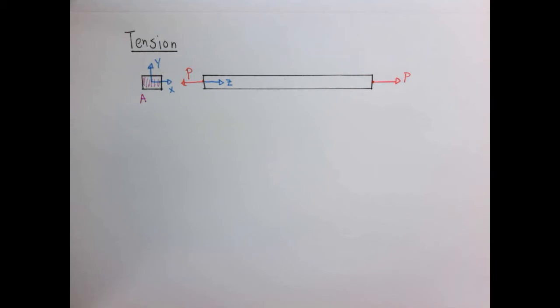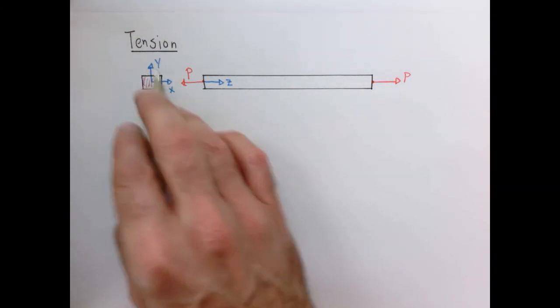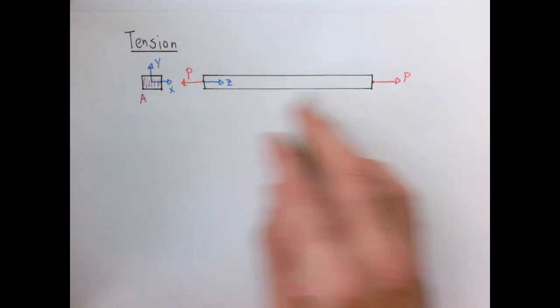We're not going to really come up with any particularly new insight here. It's just to try to make a connection between what we know already and this more general theory of linear elasticity. So here I have a simple bar in tension. It has a cross-sectional area A. I'm applying a load P here at the ends. And here I'm going to orient my coordinate system so that x, y is the plane of the cross-section and z is the axial direction of the bar in tension.